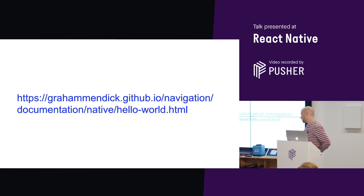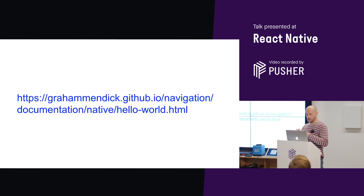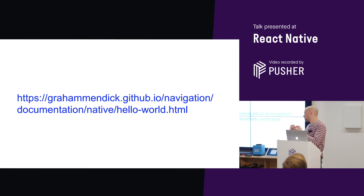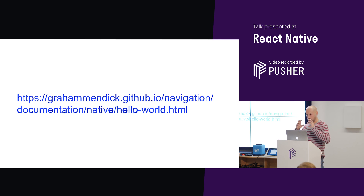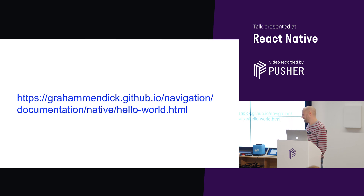Putting this all together: we can do whatever navigation we want on the React side because we have full control over the crumbs array. What goes in the crumbs array determines the stack of scenes that the Navigation Router renders. The changes to the stack of scenes are communicated to the native side by React Native, and then the NavigationStackViews apply these changes by calling into the native platform-specific navigation APIs on both platforms. That's a link to the documentation. Thanks.